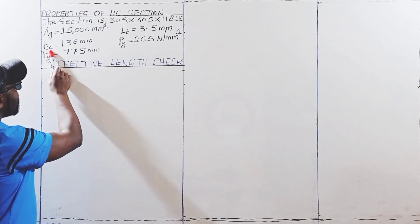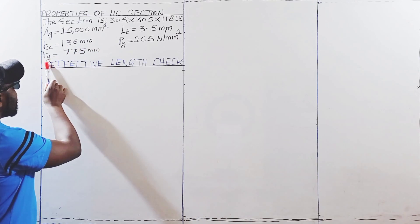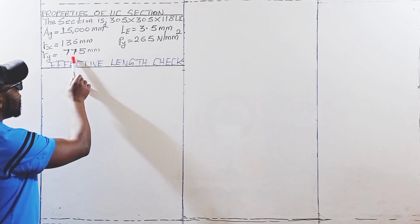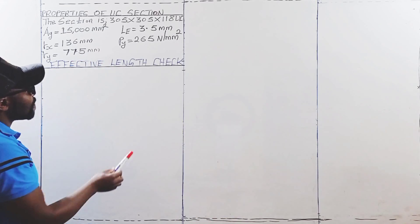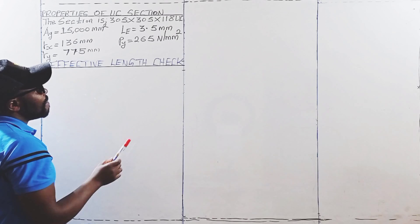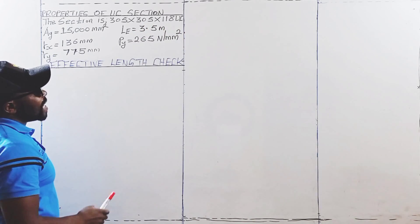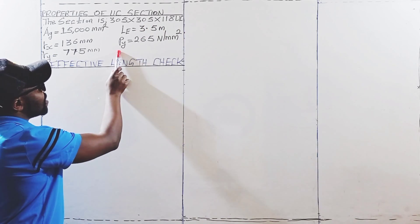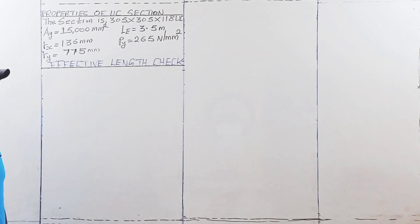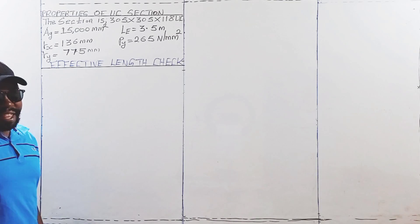The radius of gyration about the XX axis is 136 millimeters. The radius of gyration about the YY axis is 77.5 millimeters. The effective length is given as 3.5 meters. The design strength of steel is 265 newtons per square millimeters. The first thing we are going to do is to check the effective length.